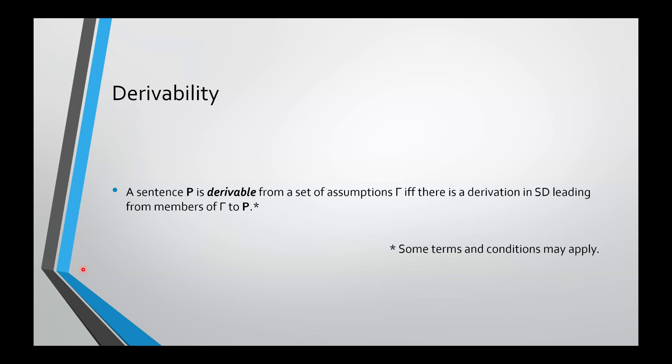Some terms and conditions may apply, meaning the definition is a little bit more complicated than that, but we're going to see the complexity later on. The way that this is written is with this symbol here. This is called a single turnstile. So if we want to say that P is derivable from the set gamma, then we write gamma single turnstile P.